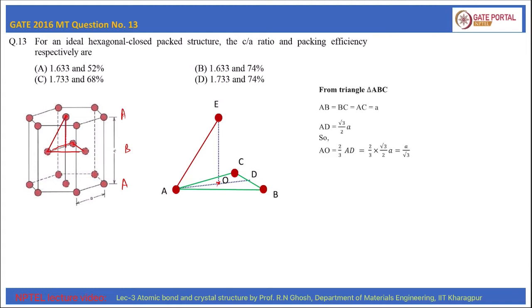AB, BC, and AC are equal, and each is equal to the lattice parameter a. So this is an equilateral triangle. We can write AD is equal to √3/2 · a, and AO is equal to 2/3 of AD, which is equal to 2/3 of √3/2 · a, that is equal to a/√3.